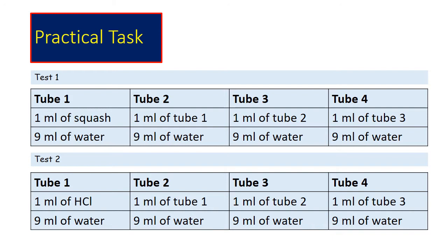An opportunity for a little practical to do at home. You probably can't do the one with hydrochloric acid at the bottom, but you can do a version with squash, or food coloring, or jelly crystals, or something similar at home. Add 1 ml of squash to 9 ml of water. If you need to scale that up so you can do it on a scale, that's fine.